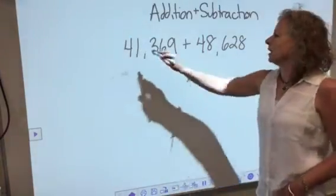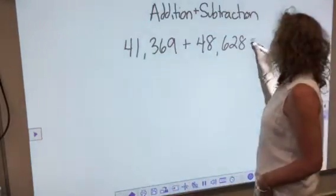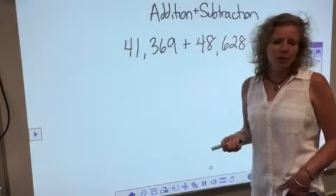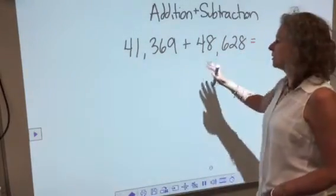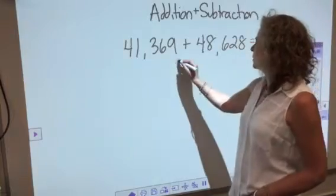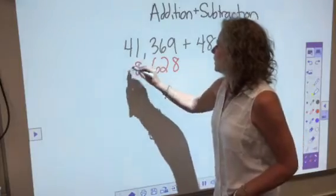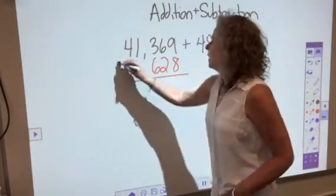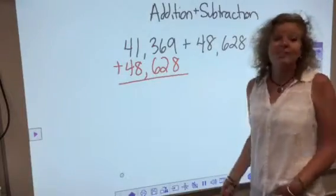The first thing when you get a math problem, this one's an addition problem, you're looking for the sum. You want to make sure that you line up the numbers. Please do not try to add horizontally. You want to line them up vertically. So I'm going to put the 8, then the 2, then the 6, then the 8, then the 4. I'm going to add these, so now all I have to do is count.